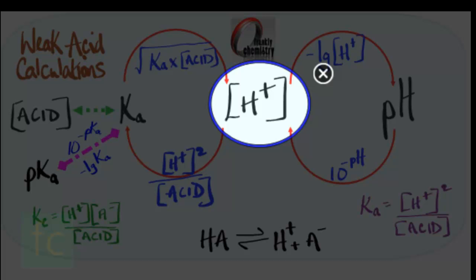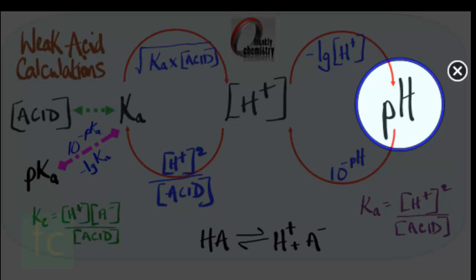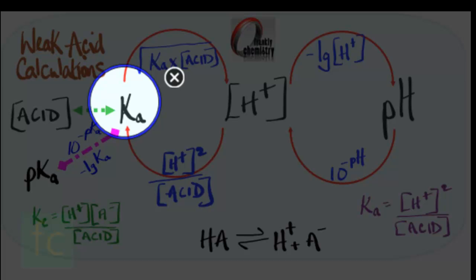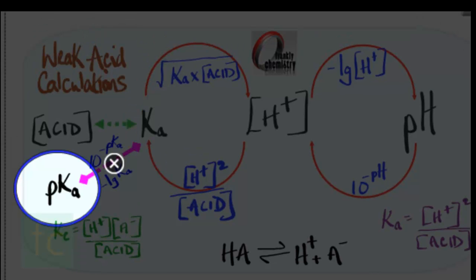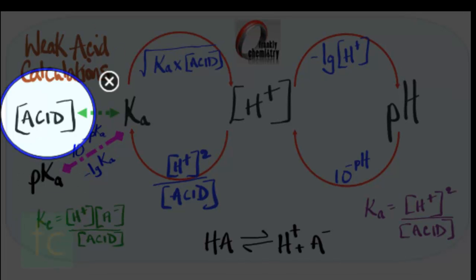Before we look at calculations involving each of these steps, let me summarize the key points. From the concentration of hydrogen ions it's possible to get the pH, and given the pH it's possible to find the concentration of hydrogen ions. From the concentration of hydrogen ions you can get the acid dissociation constant Ka. When you know Ka it's possible to obtain the pKa value. And if you have both Ka and the concentration of hydrogen ions, you can obtain the concentration of the acid.